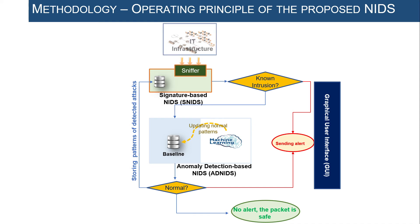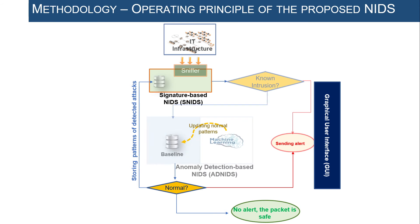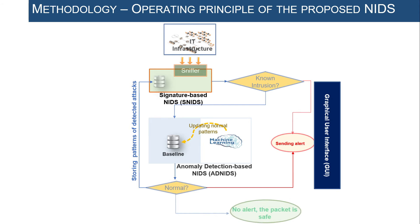For the operating principle: the IT infrastructure to monitor feeds into the SNIDS module, which captures real-time network traffic and checks packets against the signature database. Two scenarios arise: if the captured packet matches a known attack, the system notifies the security administrator. If it is not a known attack, the packet is communicated to the ADNIDS module, which checks for irregularities with respect to the normal baseline. If behavior is regular, the packet is ignored as it presents no security risk.